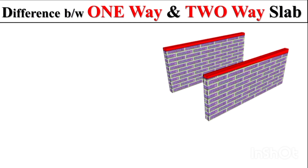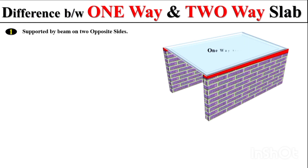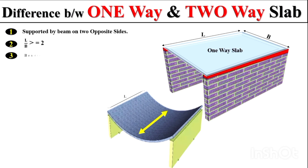The one-way slab are those slabs which are supported by beams on two opposite sides. Also remember, the one-way slab are those slabs in which the length-to-breadth ratio is greater than or equal to two.